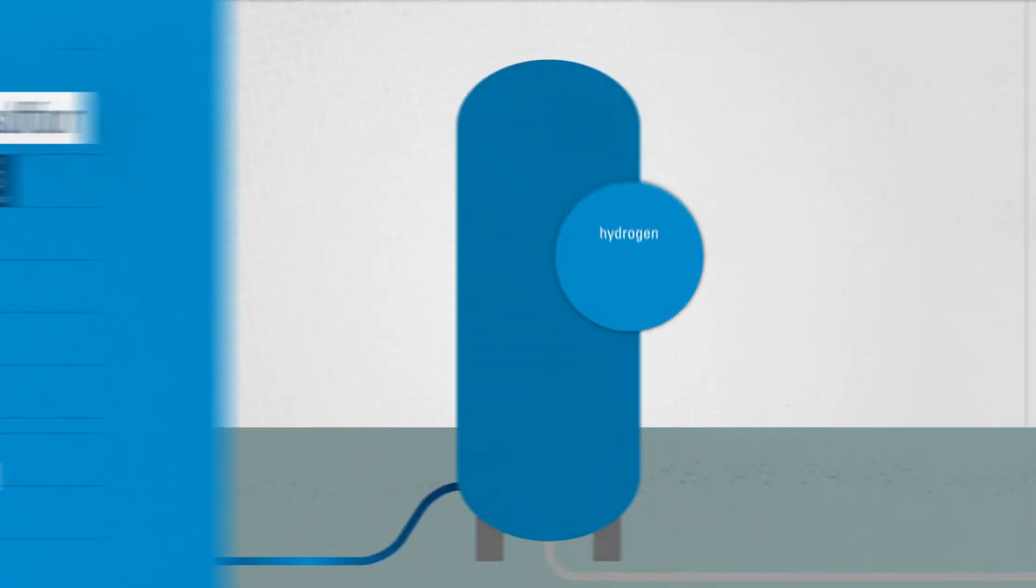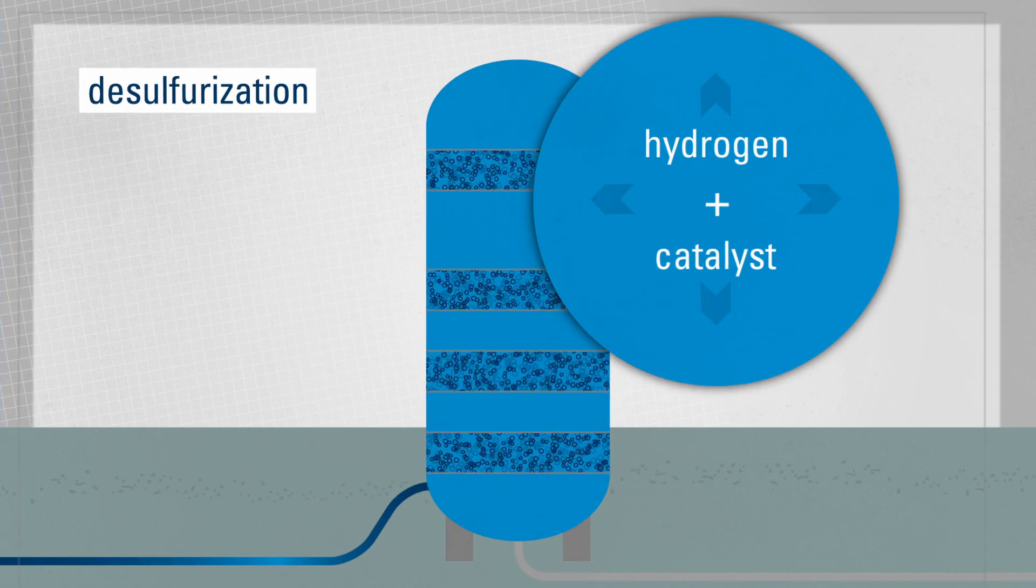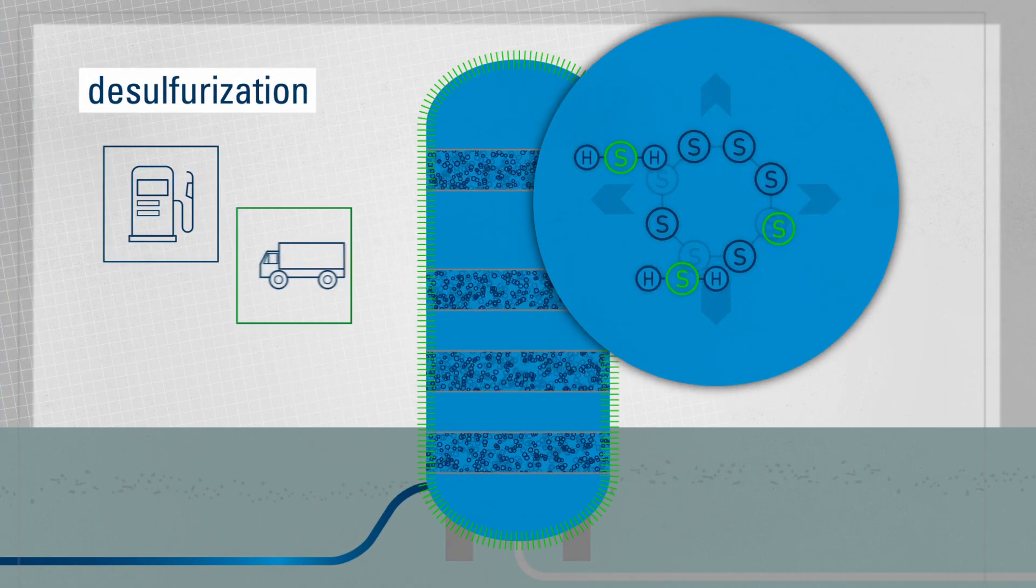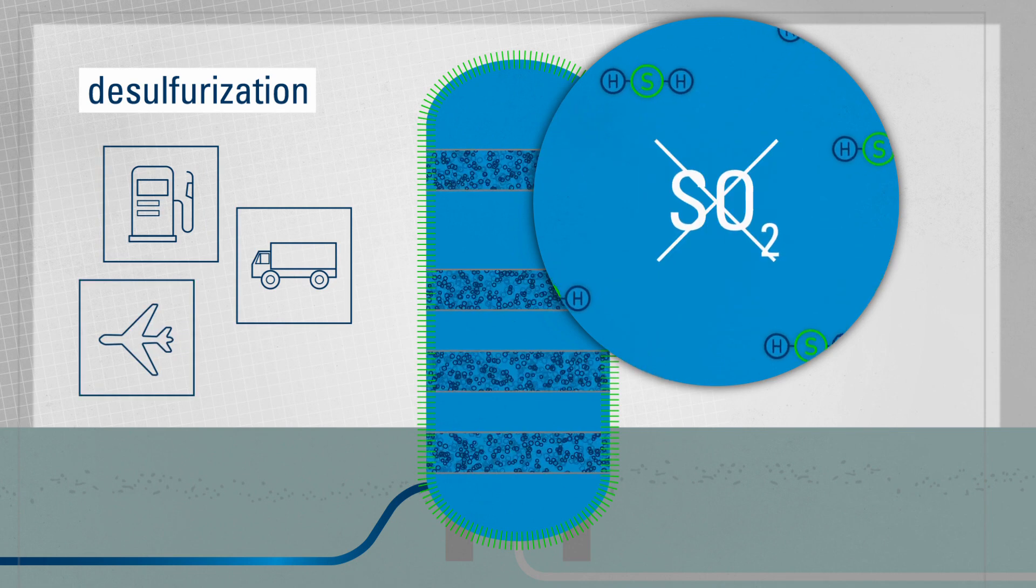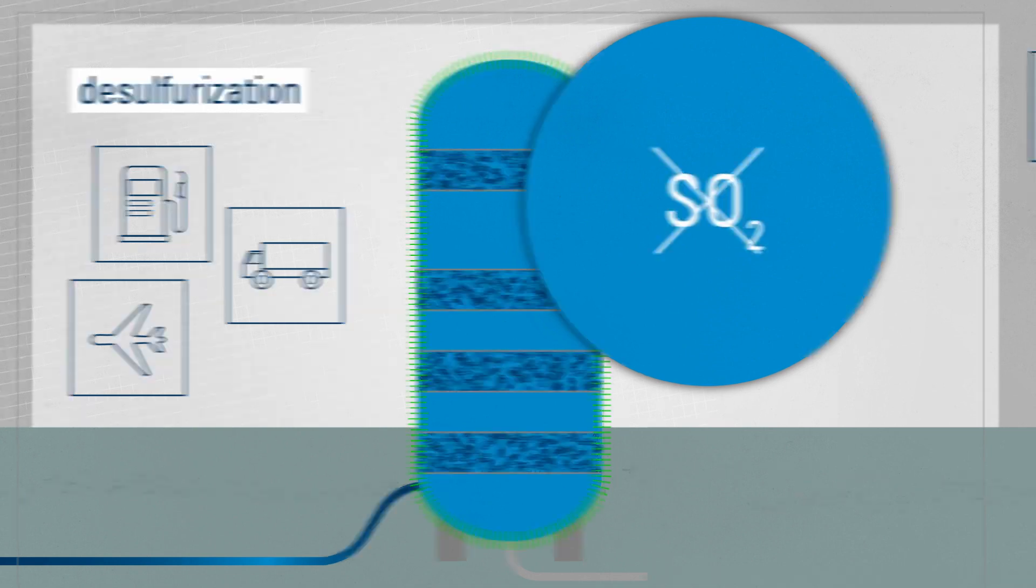The sulfur in the crude is bound with the help of hydrogen and a catalyst. During the subsequent combustion of gasoline, diesel, or kerosene, sulfur dioxide, a pollutant, is then prevented from being released.